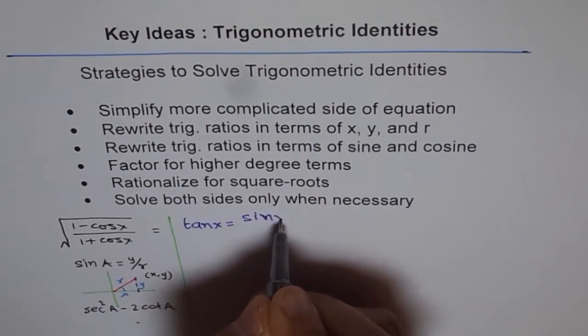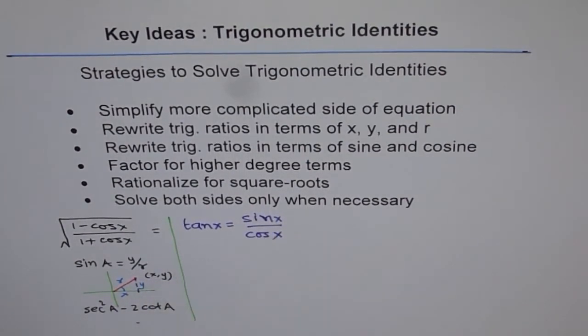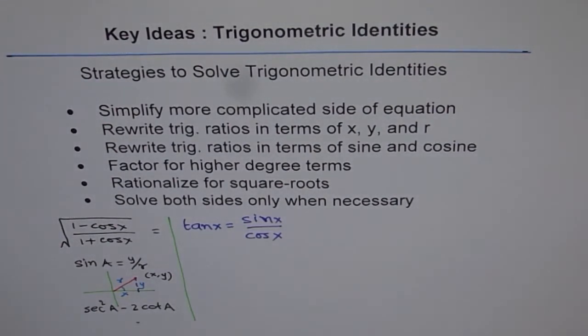Even a simple identity like how will you prove that tan x is equal to sin x over cos x? That is a very simple, in fact, an identity which we will be using most of the time to prove the identities. For that, this is an excellent example. Just take any coordinate and then the ratios and you can prove it very easily.